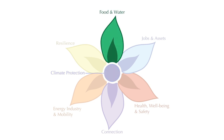This green petal represents food and water benefits. Policies that increase access to healthy food or clean water would be represented by this petal, such as a program that redistributes food waste.